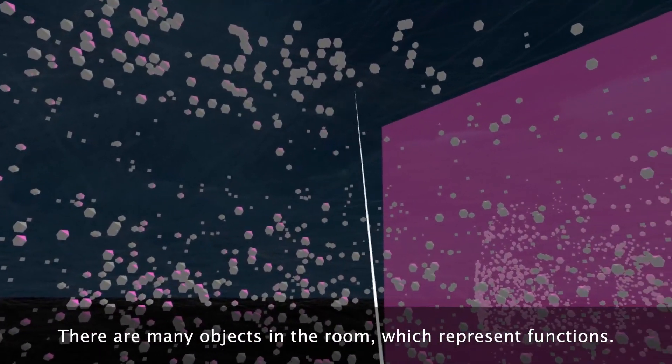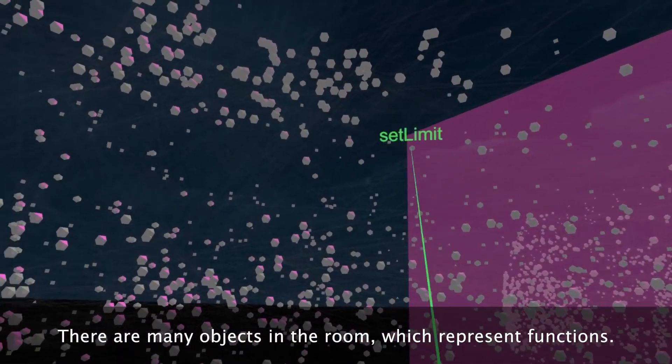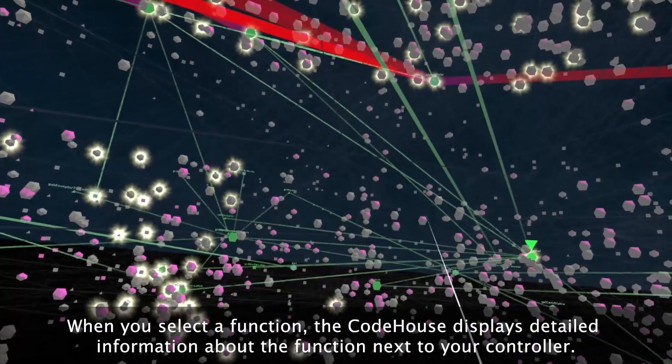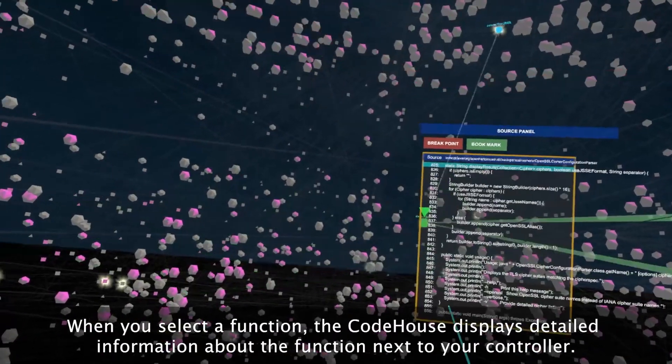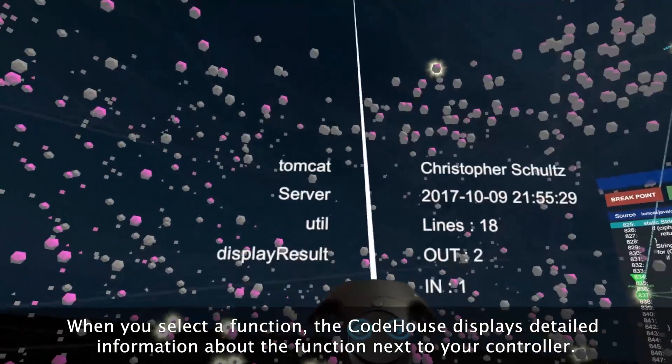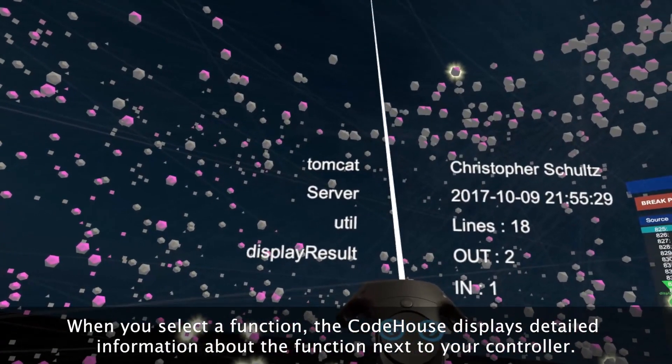There are many objects in the room, which represent functions. When you select a function, the CodeHouse displays detailed information about the function next to your controller.